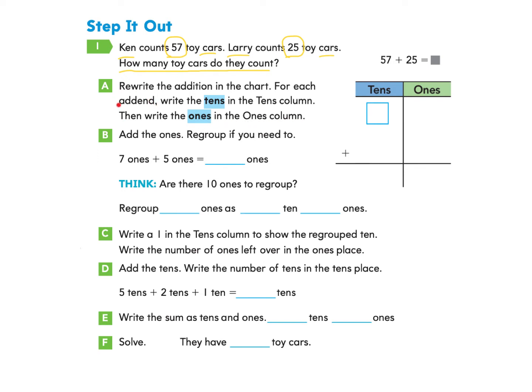If you're looking at that word addend and trying to remember what that is, that just means the numbers that are added together. So here we have 57 and 25, and those are each addends that we're adding together. We are going to fill in this chart. The first information we received was Ken counts 57 cars, so we're going to write a 57. That's five tens and seven ones. And then Larry counts 25 cars, so we're going to add 25 to 57. We're going to write a two for the tens and a five for the ones. Now we have written the addition problem in the tens and ones column correctly.